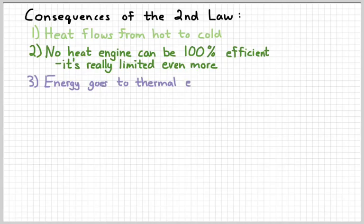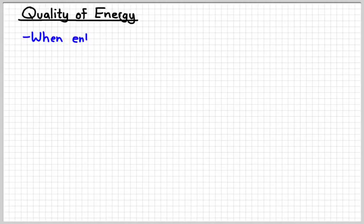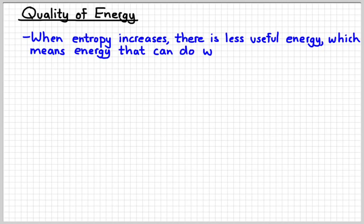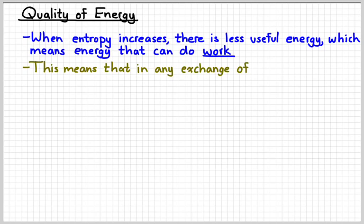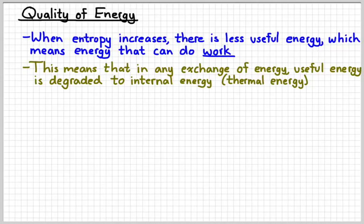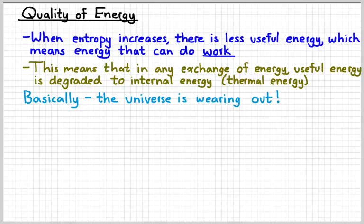And then the third consequence is that energy goes to thermal energy over time. In other words, energy degrades over time. So to kind of go back to this idea of the quality of energy, when entropy increases, that means that there's less useful energy with which you can do work. This also means that in any exchange of energy, useful energy gets degraded to internal energy. In other words, things get hotter. That's always going to be true. And then if we take that idea all the way, basically we can kind of think a little bit and come to the conclusion that if all of our energy is getting wasted, it's all going to useless energy, eventually there's not going to be any useful energy left in the universe. So essentially we're all doomed. And the universe is eventually going to end with no more useful energy. And then we're all doomed.